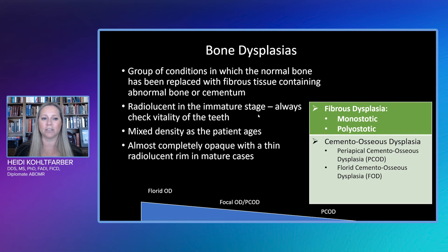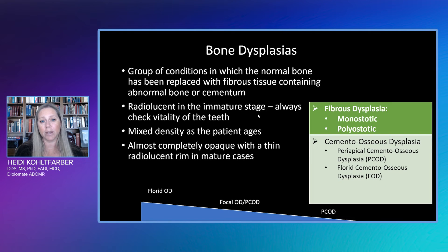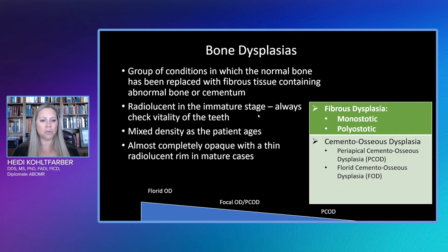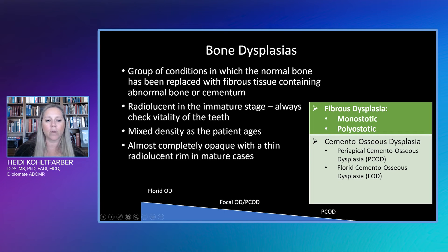Let's talk about bone dysplasias. Bone dysplasias are a group of conditions in which normal bone has been replaced with fibrous tissue containing abnormal bone or cementum, and it has several stages. In the immature stage, it is completely radiolucent, so you always want to make sure you check the vitality of the teeth when considering root canal treatment. Many times we see that these teeth have had multiple root canal treatments, or there's a history of multiple extractions because they think there are large lesions — when they're really just part of our bone dysplasias. At the intermediate lesion maturity, it will be mixed density and will increase in density as the patient ages.